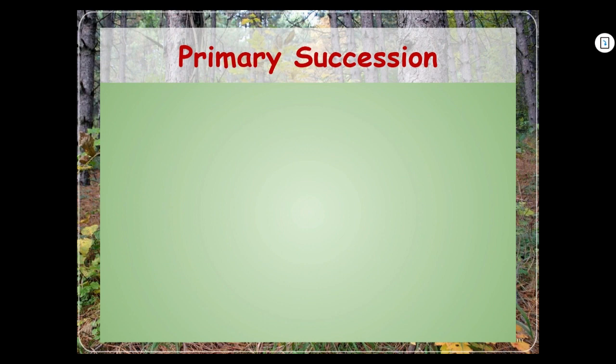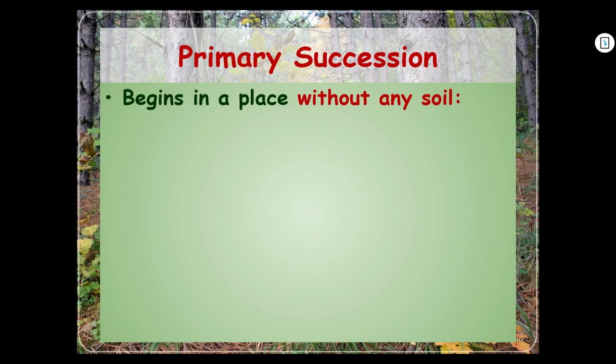Let's start with primary succession. Primary means first, so we start here first. It begins in a place without any soil — that's the first step. We're talking about abiotic factors; soil is not alive. These things usually happen on the sides of volcanoes. When a volcano erupts, lava comes out — it's melted rock flowing all over the place. But once it cools down, it turns into solid rock.